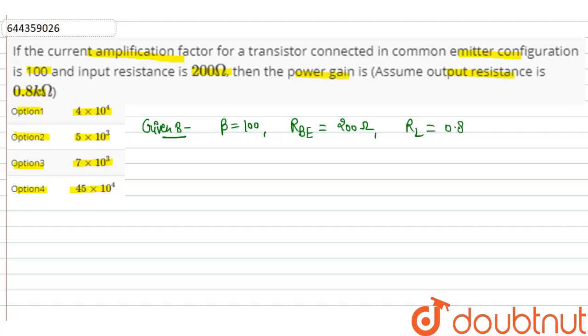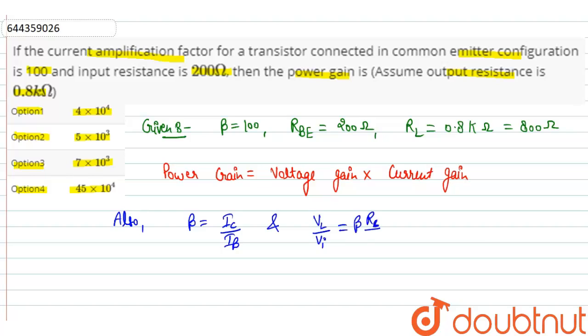Power gain is equal to voltage gain into current gain. Also, β = I_C / I_B, and voltage gain V_L / V_I is equal to β R_L / R_BE. This is current gain.